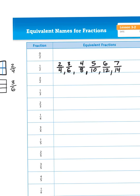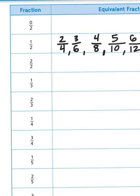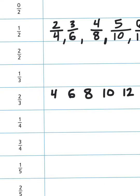Now let's apply that to a different set of fractions. Let's look at 2 thirds. The numerator is 2, the denominator is 3. So in order to find equivalent fractions, I could just skip count like I did with 1 half: 4, 6, 8, 10, 12. So I'm increasing my numerator, my top number, by 2's.